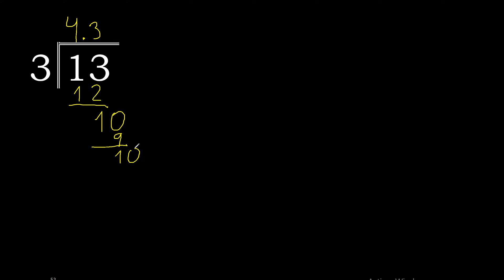Complete with 0. 3 multiplied by 3 is 9, subtract. Complete with 0. 3 multiplied by 3 is 9, subtract. Complete with 0.